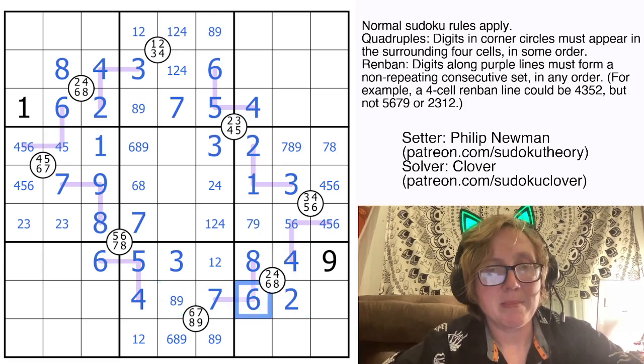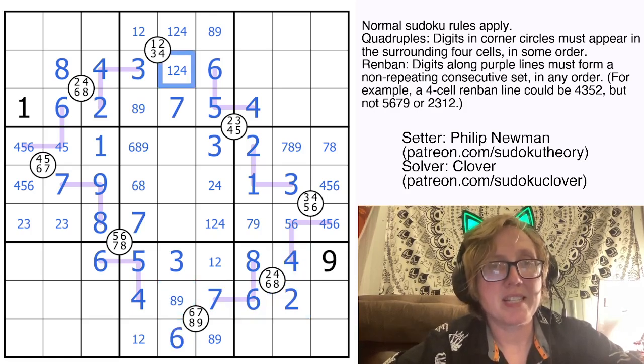This is not a 6 because of the 6 there, so that's my 6. This is not a 4 because of the 4 in row 2, so that's my 4.